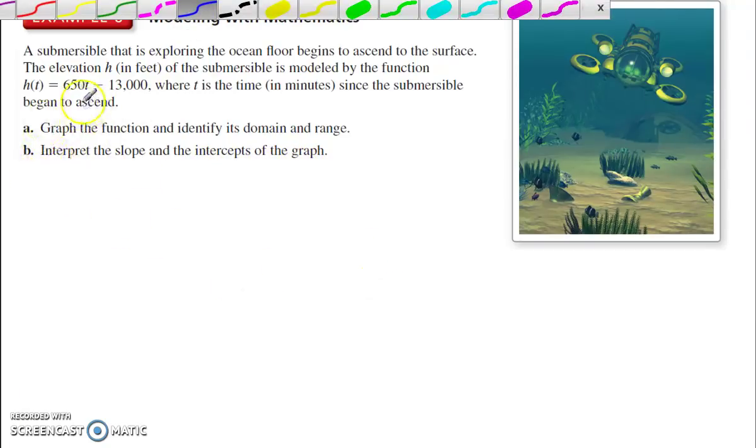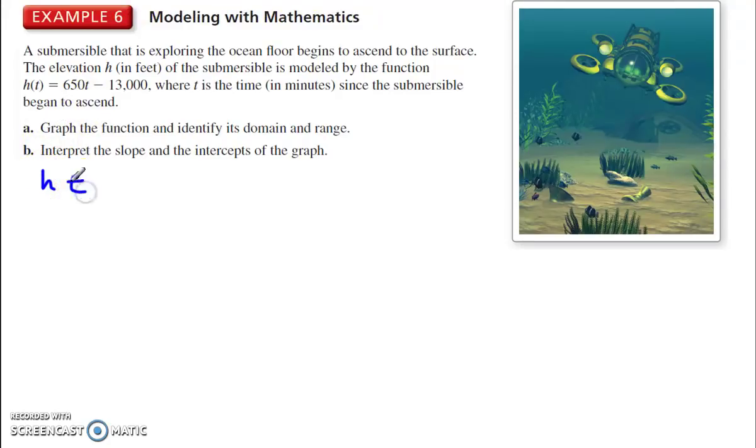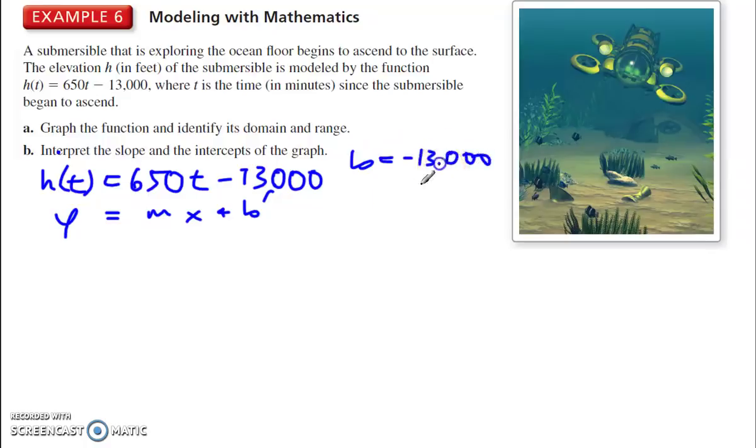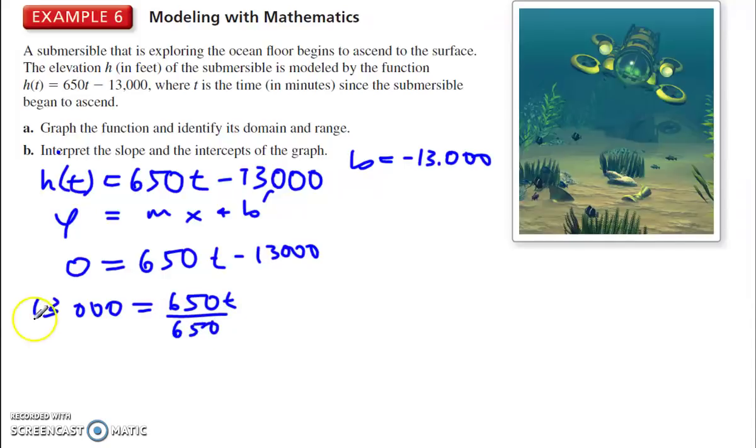In order to graph this, I'm going to first find the intercepts. So h of t is equal to 650t minus 13,000. This is in slope-intercept form because remember, this is a nickname for y. y equals m variable x plus b. So the y-intercept is negative 13,000. To find the x-intercept, I need to make y zero. So 0 is equal to 650t minus 13,000. Add 13,000 to each side. We get 13,000 is equal to 650t and divide by 650 and t is equal to 20.